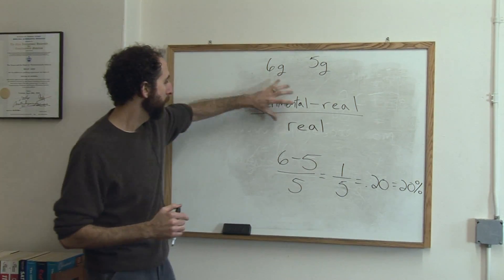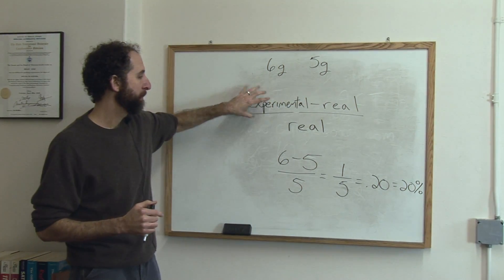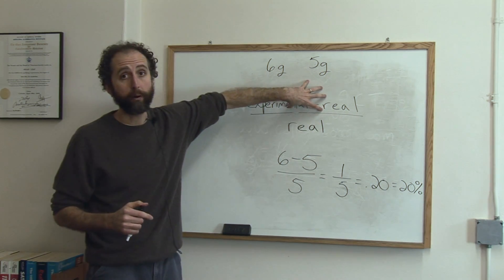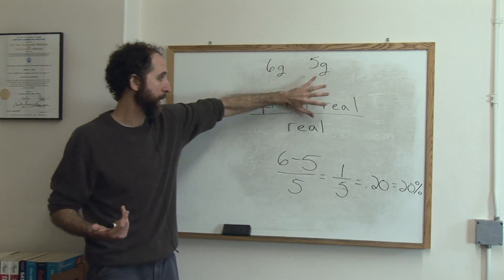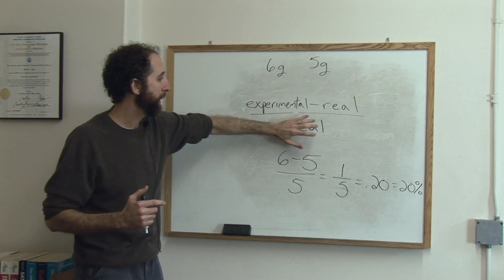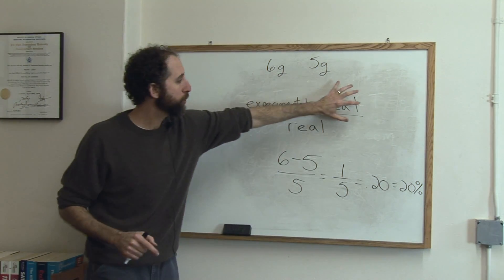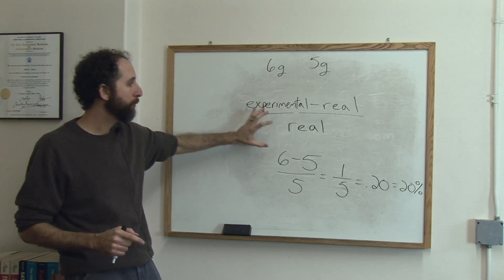So how does the formula work? The formula is just what you got minus what it's supposed to be. So that's your error. That's called the absolute error. It's just how much were you off. Divided by real because it says how much were you off out of the whole thing.